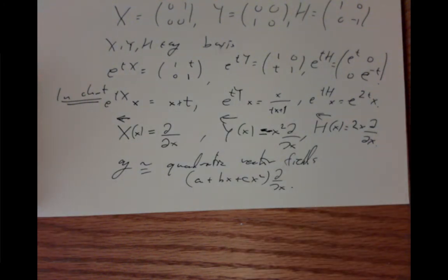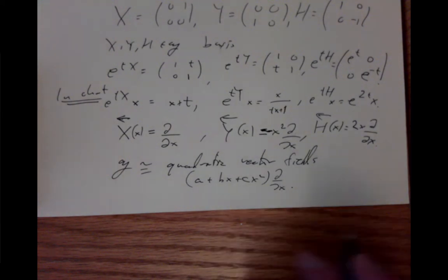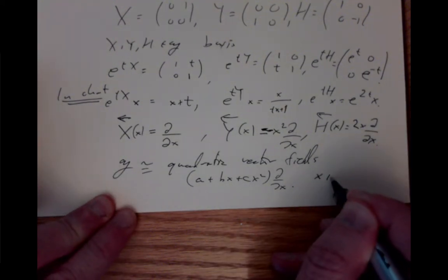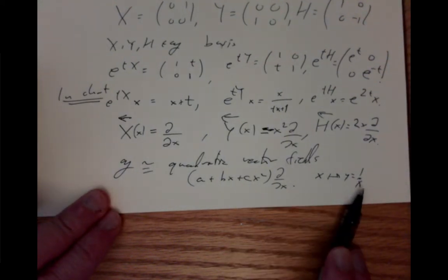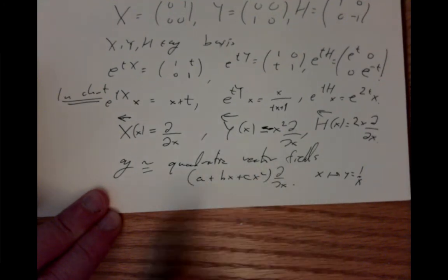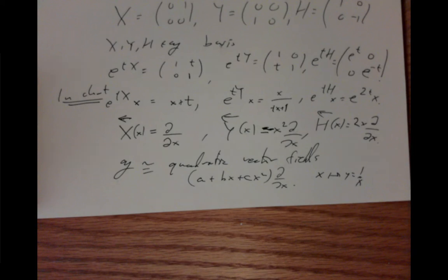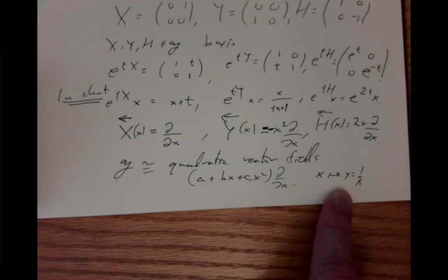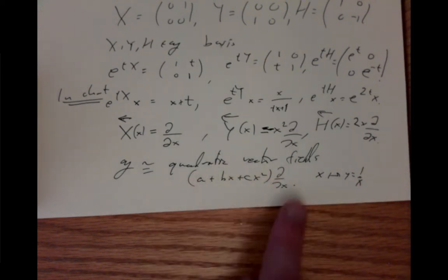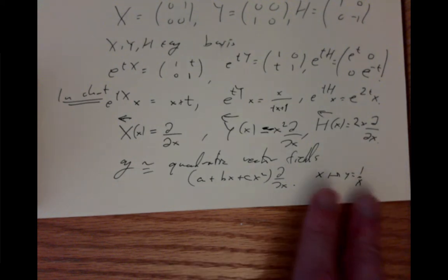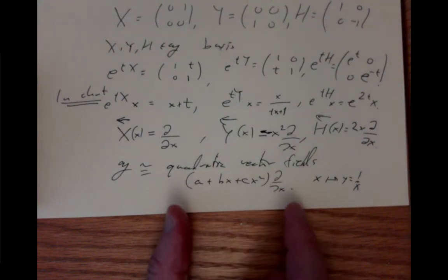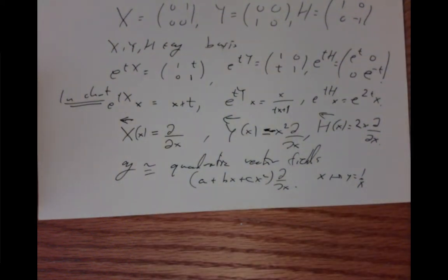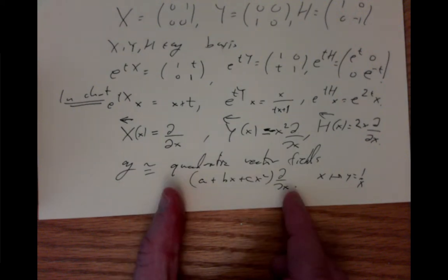Changing from x to y = 1/x, one finds that quadratic vector fields remain quadratic — a surprisingly non-obvious fact. These vector fields are quadratic in x and also quadratic in 1/x. This is an explicit example of a non-trivial manifold RP^1 with two charts, where the Lie algebra of SL(2,R) acts as quadratic vector fields in each chart.